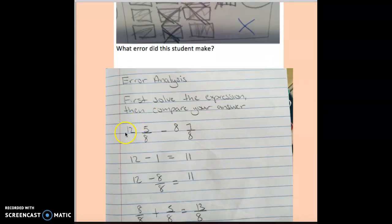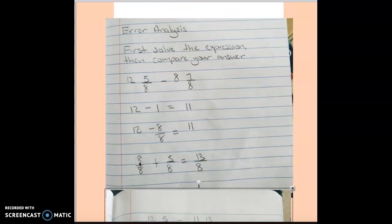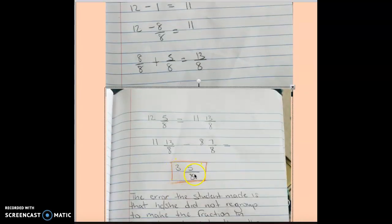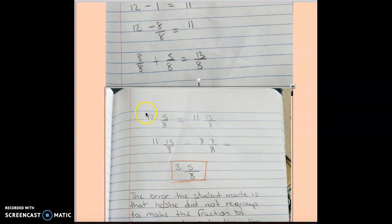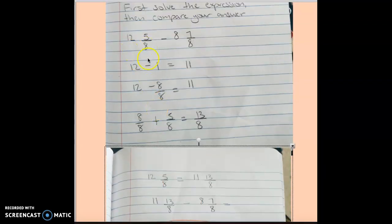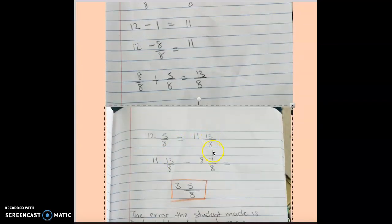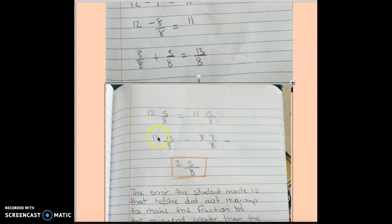After solving it, I noticed the answer is 3 and 5 eighths. The steps I followed: first I took notice that the numerator is too small to subtract 7, so I have to regroup. Once I regroup, I converted my 12 and 5 eighths to 11 and 13 eighths. Now that my numerator is large enough, I can subtract: 11 and 13 eighths minus 8 and 7 eighths equals 3 and 5 eighths.